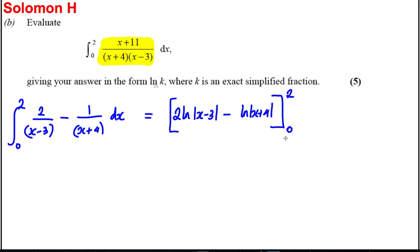Now we're going to substitute in 2 and substitute in 0 and subtract. So here we would get 2 ln(1), because when you put 2 in you get minus 1 but you modulus it, so 2 ln(1) - ln(6), and we're going to subtract from that the answer when you put 0 in, which would be 2 ln(3) - ln(4).